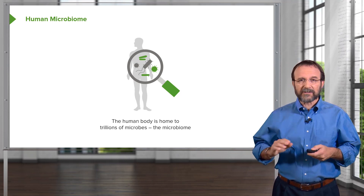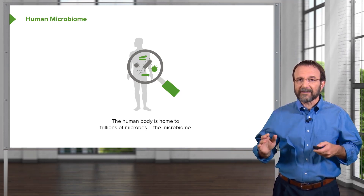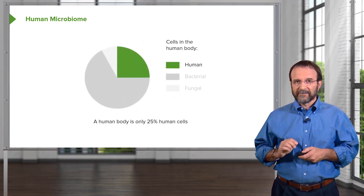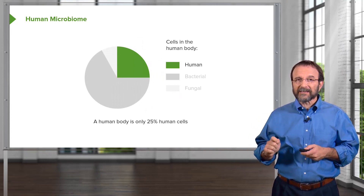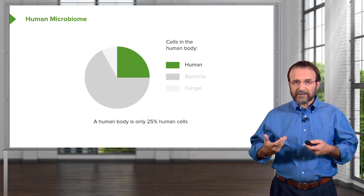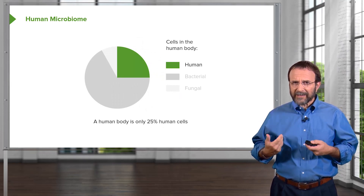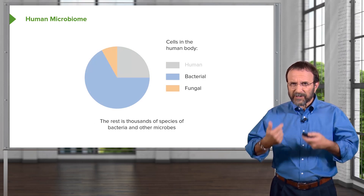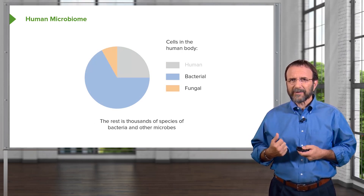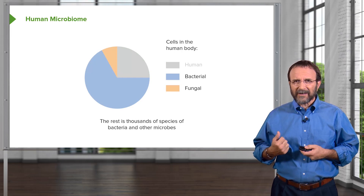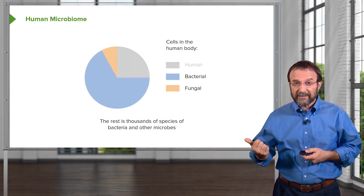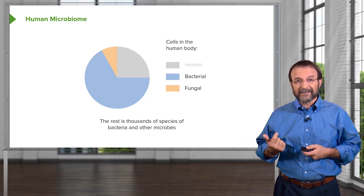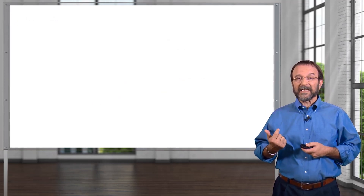The microbiome is a composition of all the microbes that are everywhere in us and on top of us. A human body is only 25% human cells. You think you're looking at just human cells, but 75% of what you see are bacteria — very, very little human cells. Bacteria, fungi, and archaea. It's amazing.